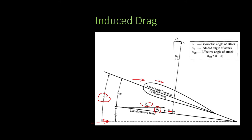So there is an extra angle of attack alpha_i. Due to this alpha_i, the lift which would have been perpendicular to V∞ is now perpendicular to the local relative wind, which is inclined at alpha_i. So the lift vector gets tilted by alpha_i. Due to this inclination there is a horizontal component of lift as well, and this horizontal component acts as an additional drag — this is known as induced drag.